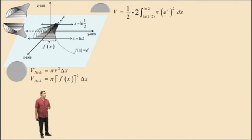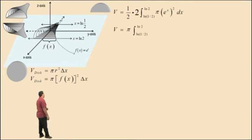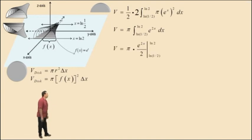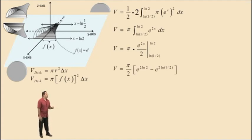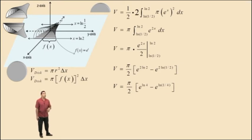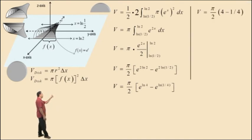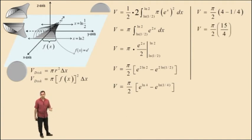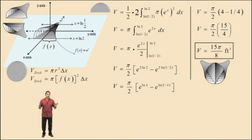Notice f of x is replaced with e to the x. So 1 half times 2 is 1. We can factor out the pi, which is a constant. That gives us this integral. Integrating gives us this result. Substituting in our limits of integration gives us this. Now notice that 2 natural log of 2 equals natural log of 4, and 2 natural log of 1 half equals natural log of 1 fourth. Evaluating the terms inside this bracket gives us the result 4 subtract 1 fourth, which then gives us the result volume equals pi over 2 times 15 over 4, giving us our final volume of 15 pi over 8 feet cubed. That's the volume of the entire inside of the manifold.